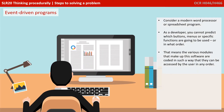Consider a modern word processor or spreadsheet program. As a developer, you cannot predict which buttons, menus or specific functions are going to be used or in what order. That means the various modules that make up the software are coded in such a way that they can be accessed by the user in any order they like.